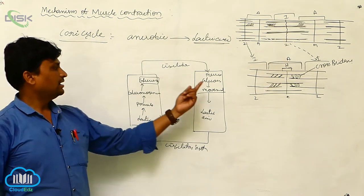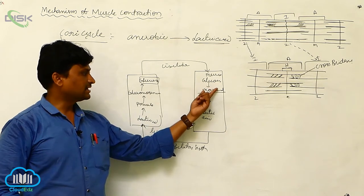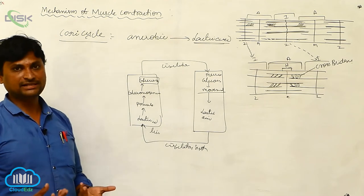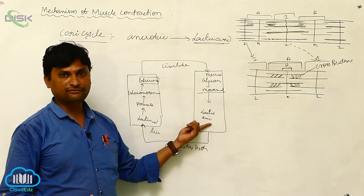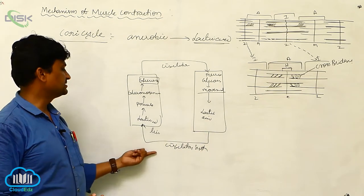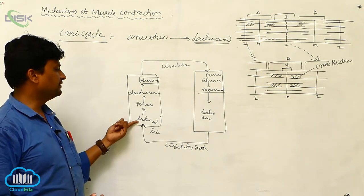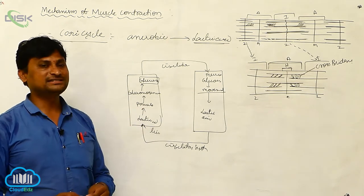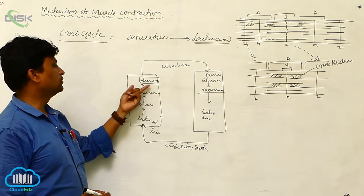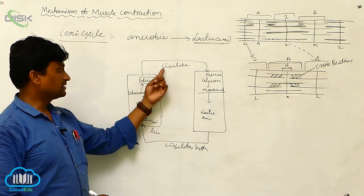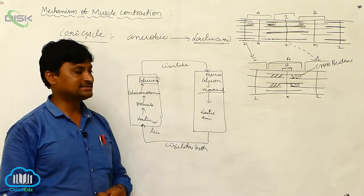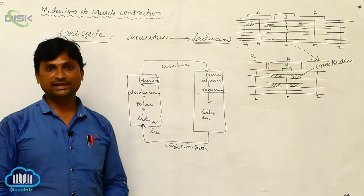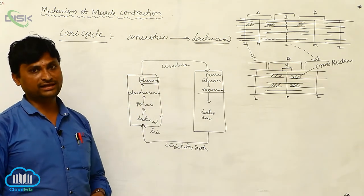This continuously shows the movement, and finally the lactic acid travels through the circulatory system to reach the liver. In the liver, lactic acid is converted to pyruvate, which undergoes gluconeogenesis and forms glucose. The glucose reaches back to the muscles through the circulatory system, and movement starts again. This type of cycle we call the Cori cycle.